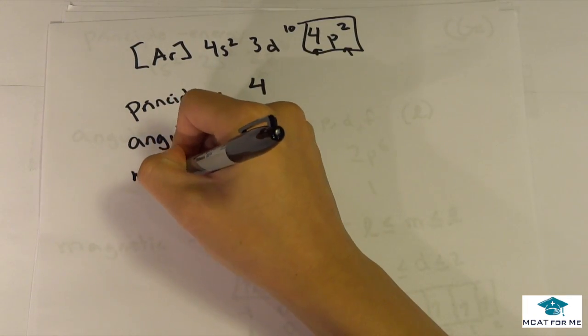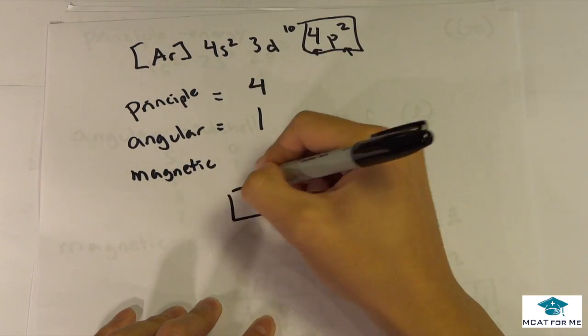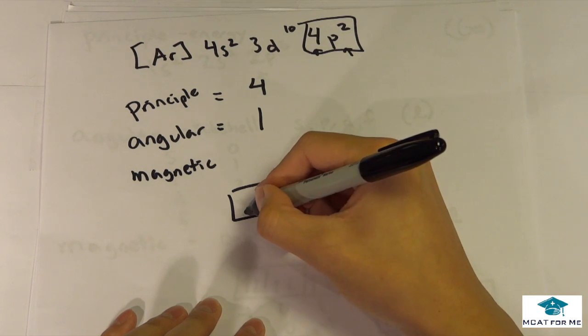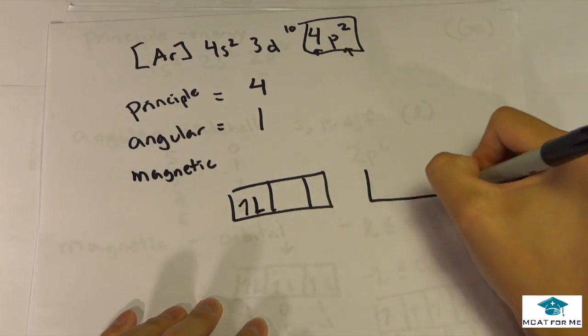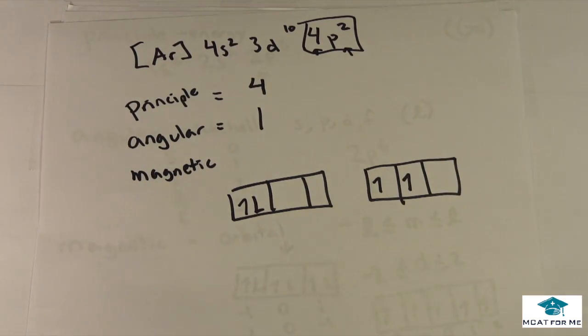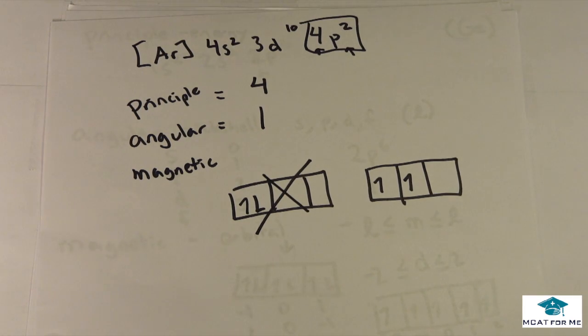And what would be the magnetic? So this one we'll draw it out. So we have two electrons, right? So we have two electrons, where we go like this, or we go like that. Well, we remember from the rules, they never will pair up together before they pair up individually.